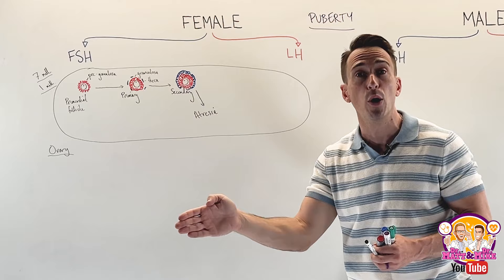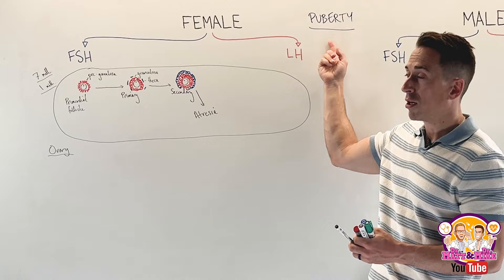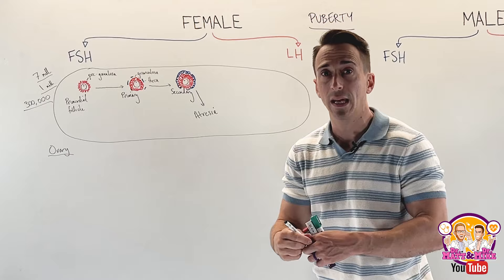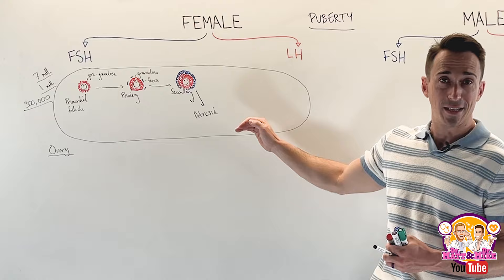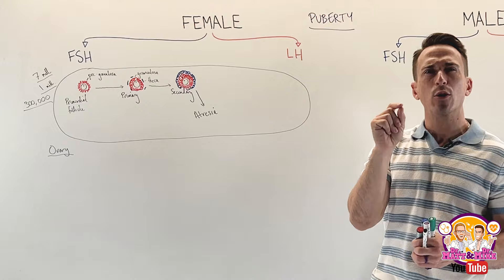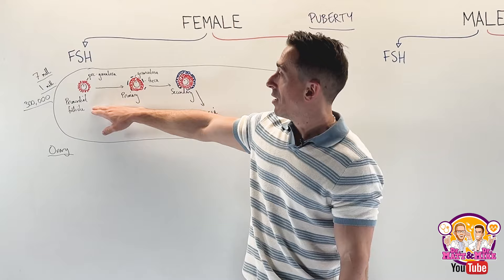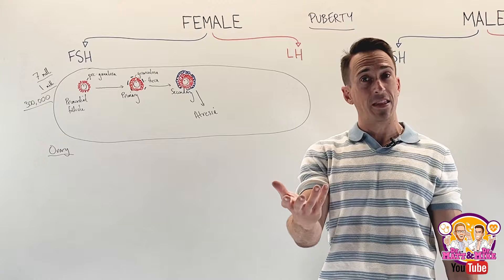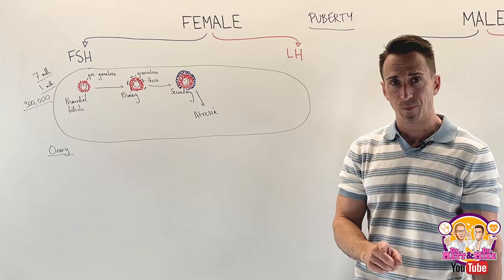From birth to puberty, we go from 1 million primordial follicles down to 300,000. By the time a female hits puberty, only 300,000 primordial follicles remain. All of this happens without the gonadotropins — without FSH and LH. Your textbook, which needs updating, says these primordial follicles just sit there waiting for FSH to stimulate them. That's not correct.